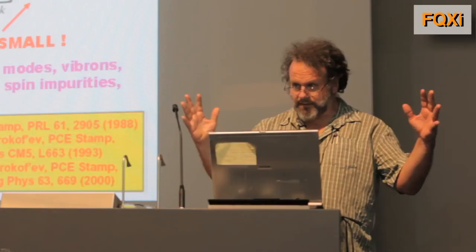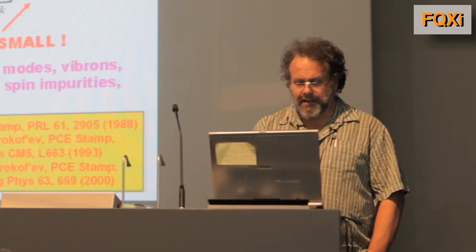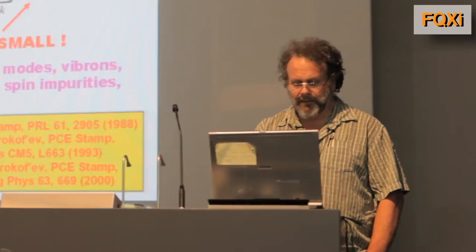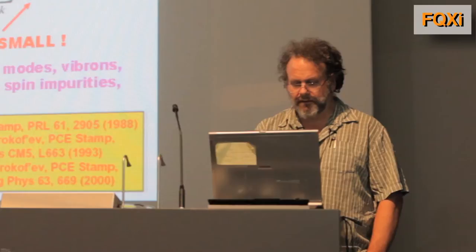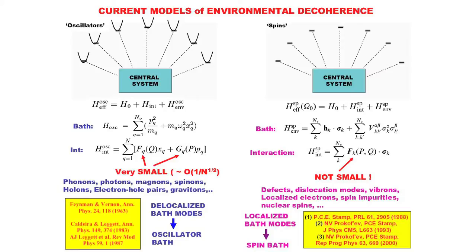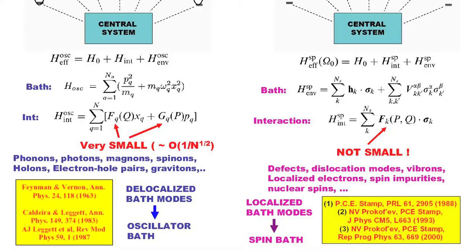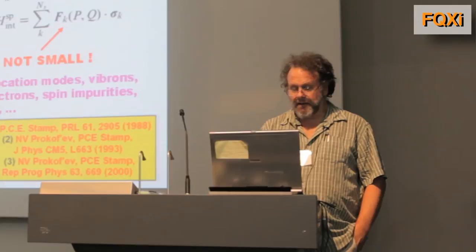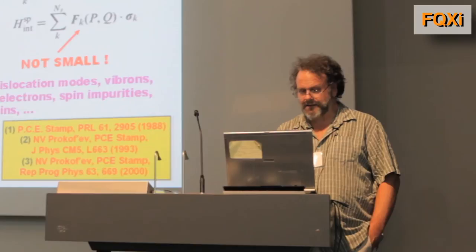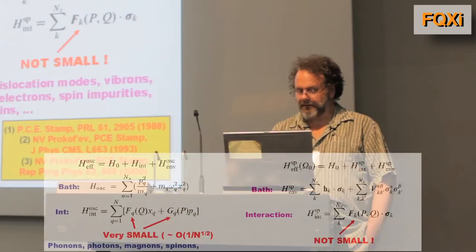We model each mode of the environment as an oscillator with some frequency, and then we couple the central system to both the coordinate and the momentum of each oscillator. The key is that these couplings are very small. There's a very nice description in Feynman's book on path integrals of why this is so — the modes are delocalized. Therefore, if the size of the box is L, each wave function is normalized by one over square root of L. As L gets big, the overlap of each delocalized mode with the central system goes down — it's of order one over root N. That allows us to use the standard methods of field theory and perturbation theory, and there's a thermodynamic limit.